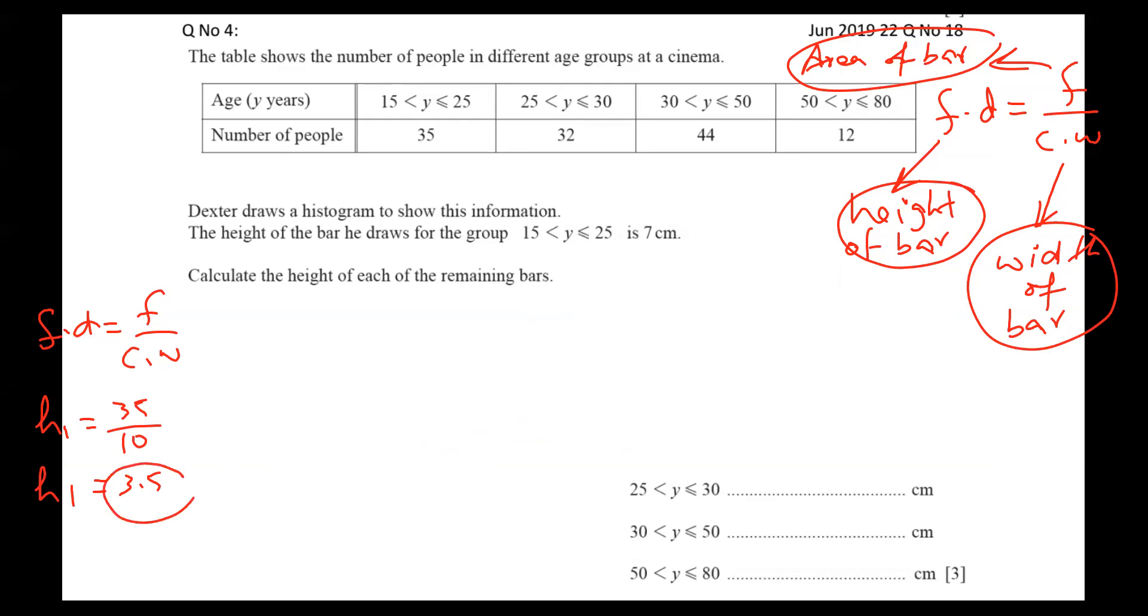So into 2. Height one equals 3.5 multiply into 2 will give us the answer. Height one is coming 7 centimeters. It means we got a hint here. Now we can find the rest, all heights, easily.